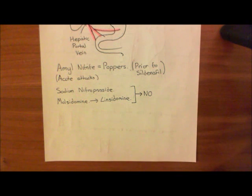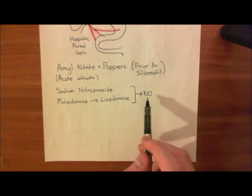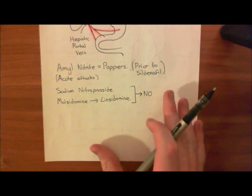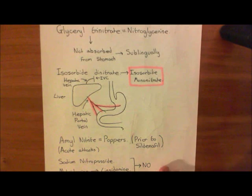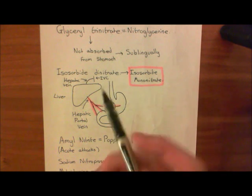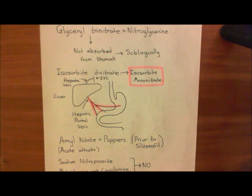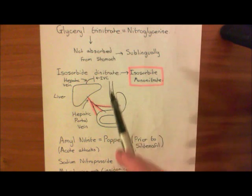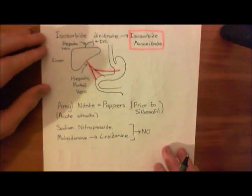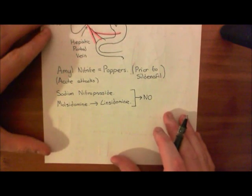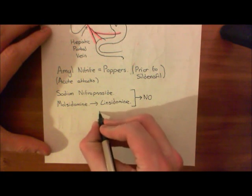Once you put sodium nitroprusside or molsidomine in the blood, they're going to start undergoing certain reactions and producing nitric oxide. The others — glycerol trinitrate, isosorbide dinitrate, amyl nitrite — it's less clear; they may require enzymes in the endothelium to actually catalyze their reactions, but whatever the mechanism, these also start producing nitric oxide. That's why another name for the nitrovasodilators is nitric oxide donors.